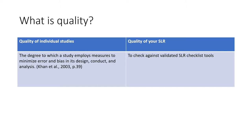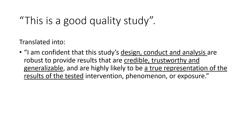When we say quality, we mean two layers. The first is the quality of individual studies included in the review — specifically, the degree to which a study employs measures to minimize error and bias in its design, conduct, and analysis. The second layer refers to the quality of the review itself, often evaluated using a validated SLR checklist tool. A good quality study means its design, conduct, and analysis are robust enough to produce results that are credible, trustworthy, and generalizable.